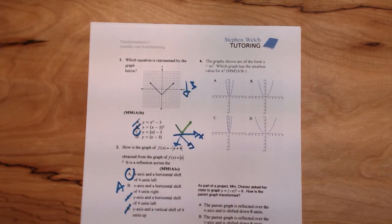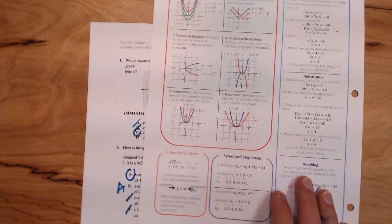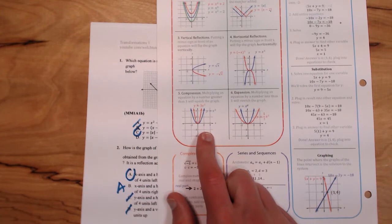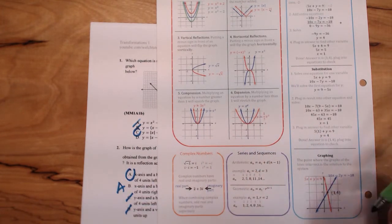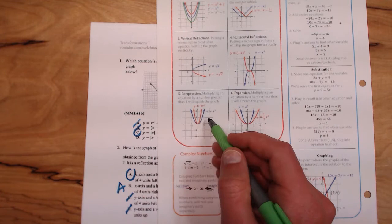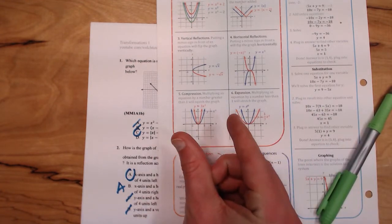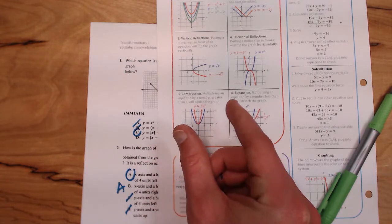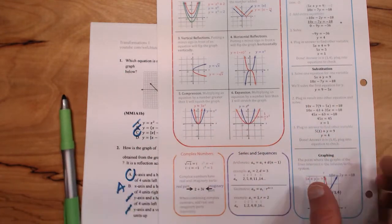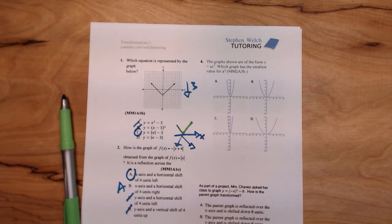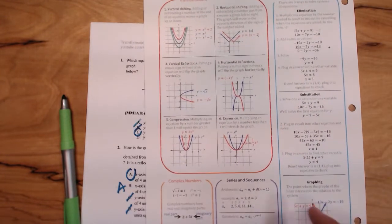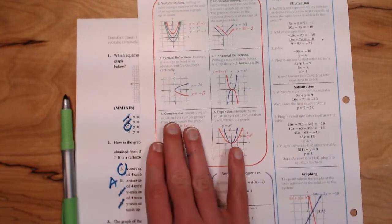The graphs shown are of the form y = ax². Which graph has the smallest value for a? This is a tough one. If we look on our formula sheet here, we see our rule for compression. In this example, I show that the bigger the number in front of the x², the more squished, the more compressed our graph will be. You can kind of see it getting squished there.